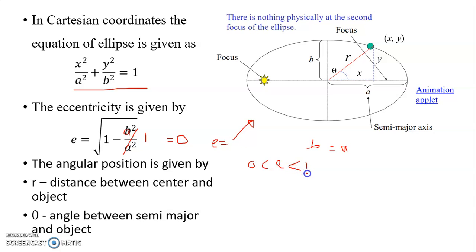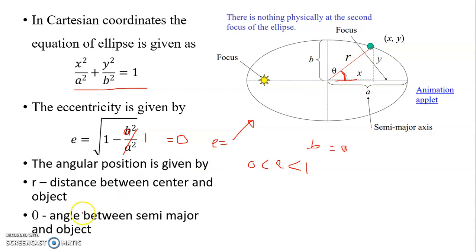The angular position is given by arc R, which represents the distance from the center to the object or location of the object. Theta is the angle measured from the semi-major axis to the vector distance.